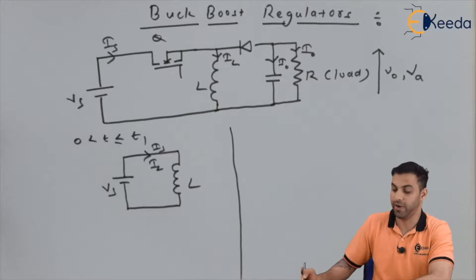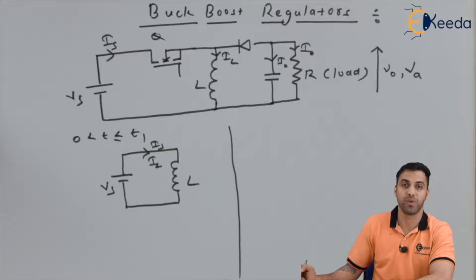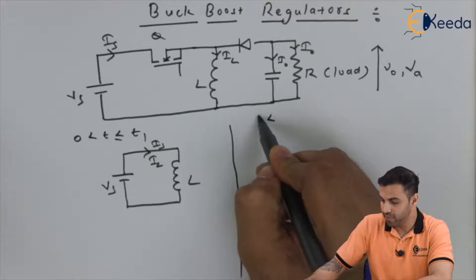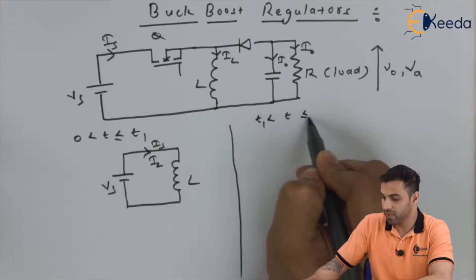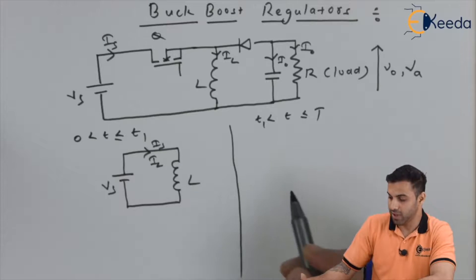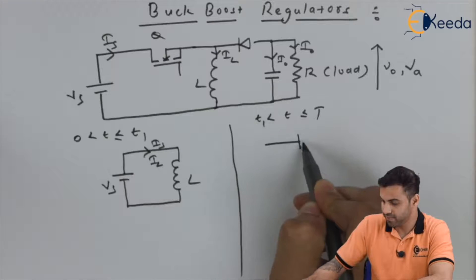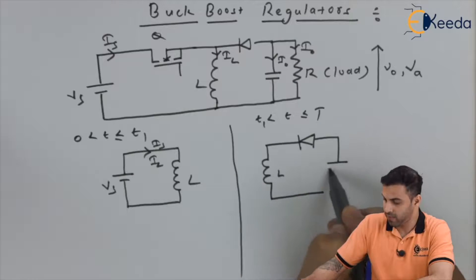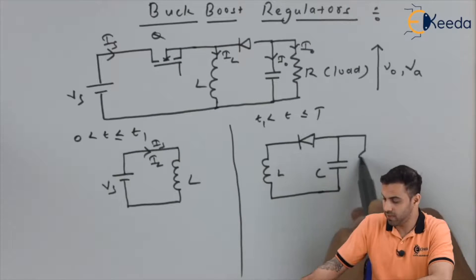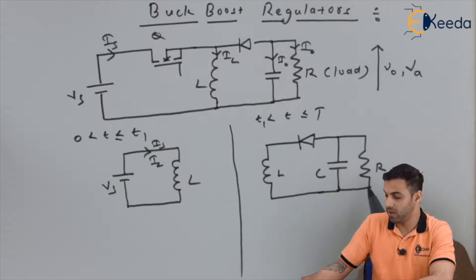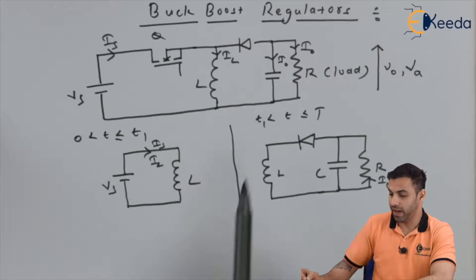If I draw the circuit during which the inductor gets discharged, the time is from t1 to the total time T. The output current reverses its direction because the inductor will be discharging in the opposite direction.